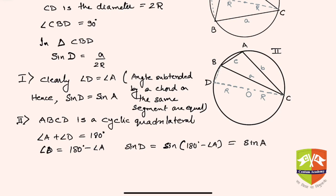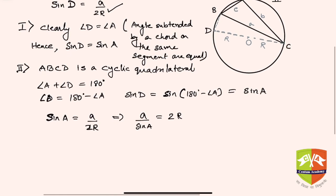So in both cases sine D is equal to sine A, and what was sine D? Basically a by 2R. Hence in both cases sine A will be equal to a by 2R. This implies a upon sine A is equal to 2R.